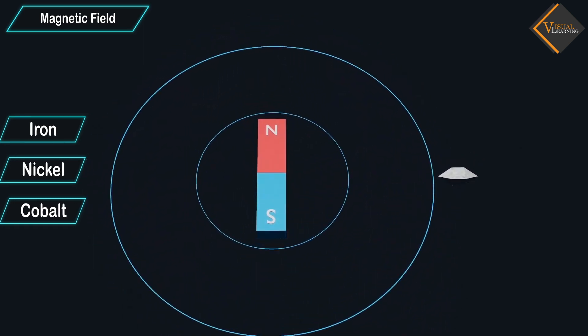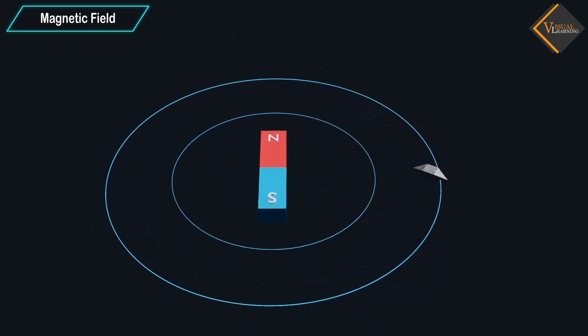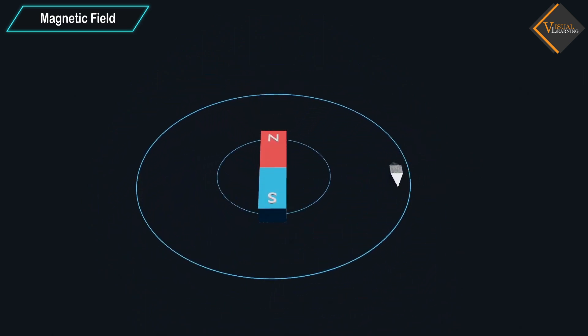When we place magnetic substance around a bar magnet, it gets attracted towards the bar magnet and aligns in a particular direction.